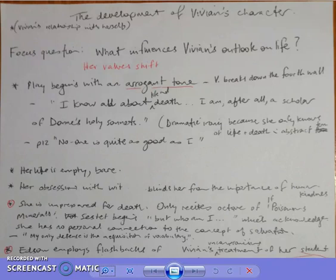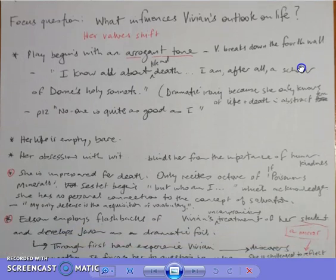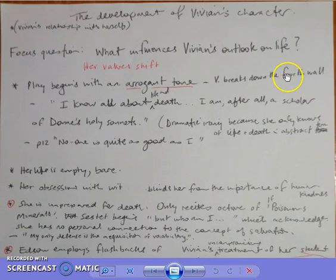The first point is that Vivian begins the play in an arrogant tone. She states, 'I know all about life and death. I am, after all, a scholar of John Donne's holy sonnets.' Here we have Vivian talking directly to the audience, and it's a great example of breaking down the fourth wall, the Brechtian device that's used in drama.